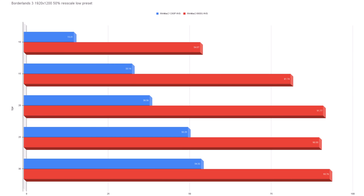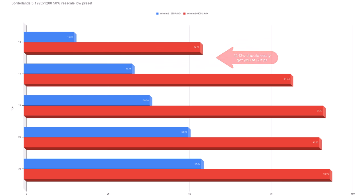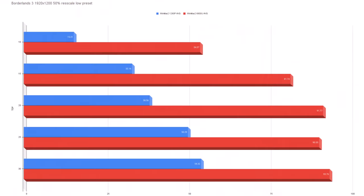Next is Borderlands 3 at 1920x1200 with 50% resolution scale and the low preset. Once again AMD is clobbering everything. Looking between 10W, 15W, and 20W, you can see there's a 60 fps threshold in there somewhere, and between 15W and 20W there's a sweet spot around 18W for efficient TDP on the 6800U. It really shines at 18W, but even 12W is a nice low-end setting for running low-resolution, high frame rate.